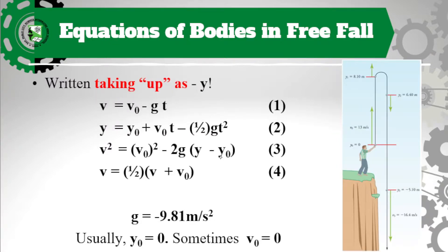The second case to consider is taking up. Just like the diagram where the object goes up first before it falls — when the body is taking up, we treat g as negative. So all equations that have g use negative 9.81. For example, v = v₀ − gt, and so on. You have to analyze the problem first: if taking down, g is positive; if taking up, g is negative.